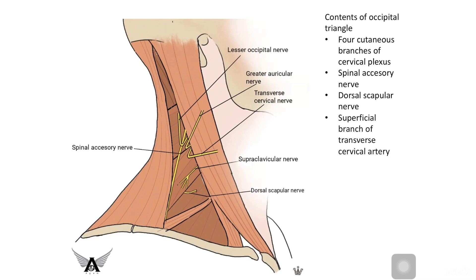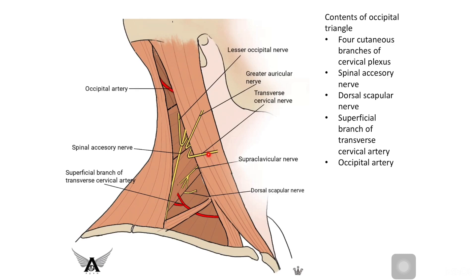There are two arteries running through the occipital triangle: the superficial branch of the transverse cervical artery and the occipital artery.